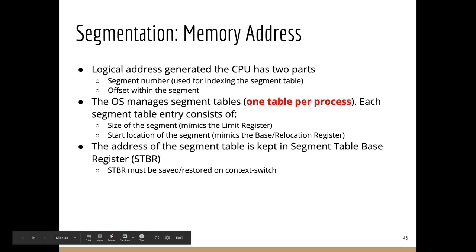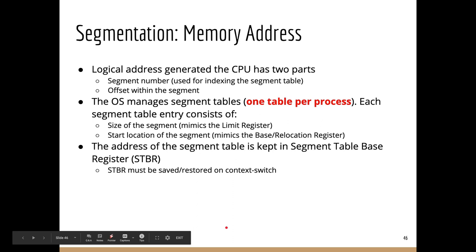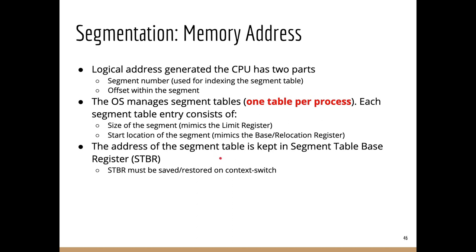To summarize non-contiguous memory allocation: the logical address has two parts — segment number and offset. The OS manages segment tables, which are unique per process, storing the size and starting location of each segment. At context switch time, the segment table base register must be reloaded with the address of the next process's segment table.